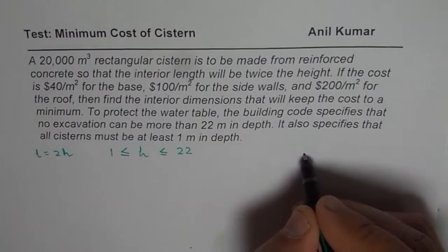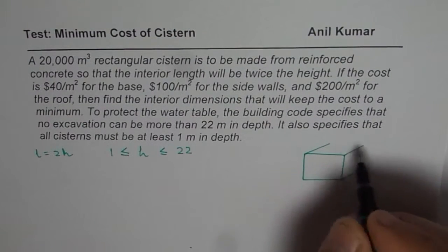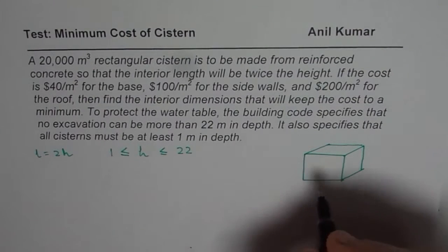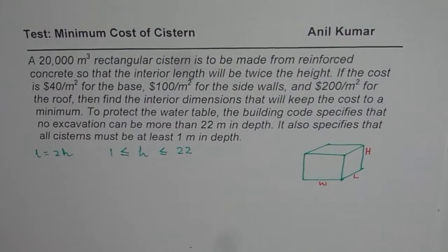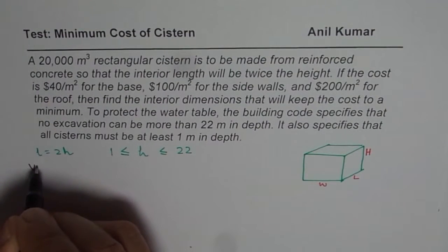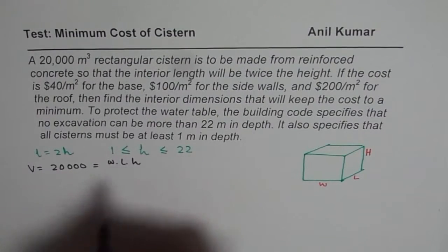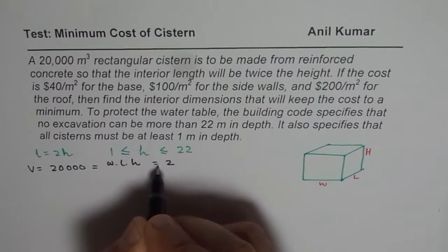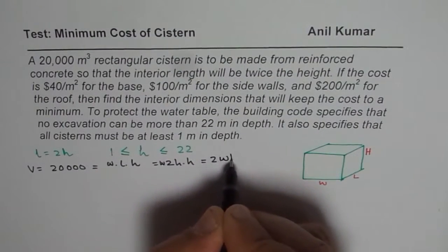Let's make a rough sketch here. So let us say this is the block we are interested in, with dimensions width, length, and height — all in lower case. The volume is 20,000 meter cube. Volume is length times width times height. We also know that length is 2 times height, so we can replace length by 2h. So we have width times 2h times h, which gives 2 times width times h squared.